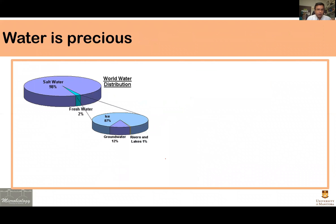Water is extremely precious. Even though our planet looks blue from space due to the presence of water, a very small proportion can be used for human consumption. 98% of all water on Earth is salty; only 2% is fresh. Of that 2%, almost 90% is frozen, and about 12% is groundwater. In our rivers and lakes, we only have about 1% of total water available to drink.